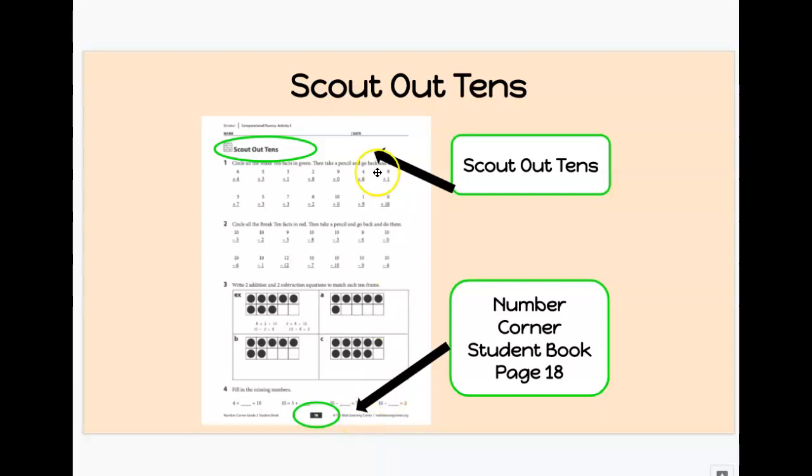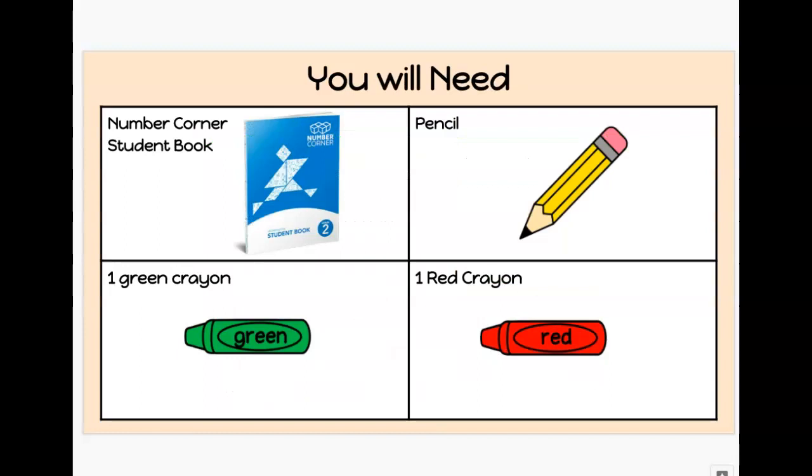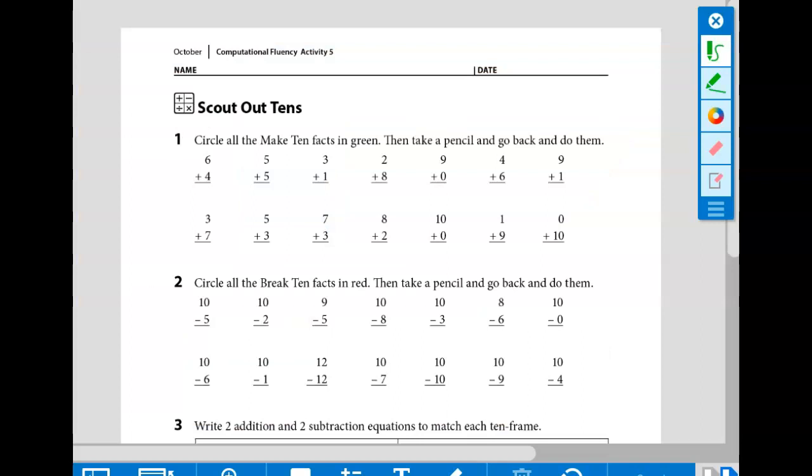It looks like this. On the top, it says Scout Out Tens. Find this page in your student book and gather your materials. Once you have everything you need, open up your student book to page 18.